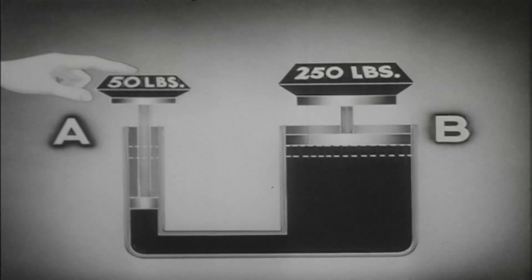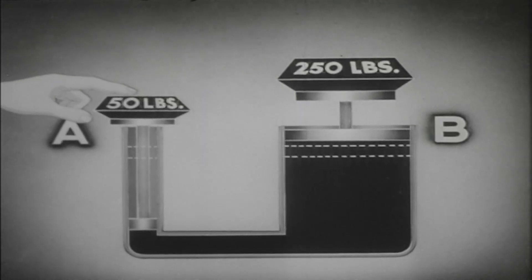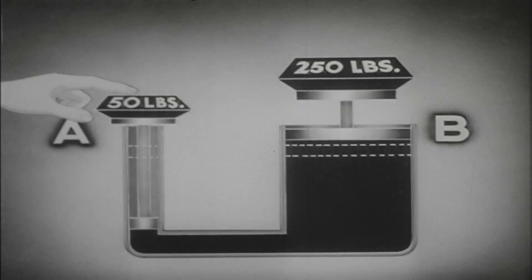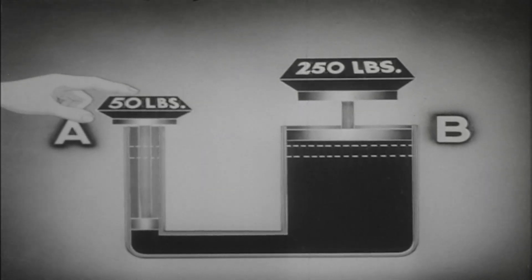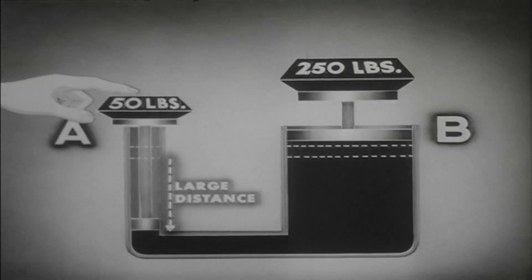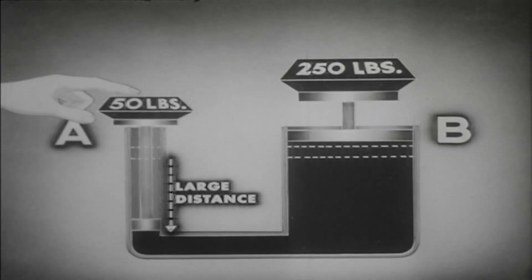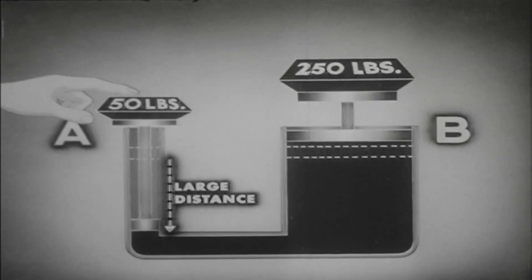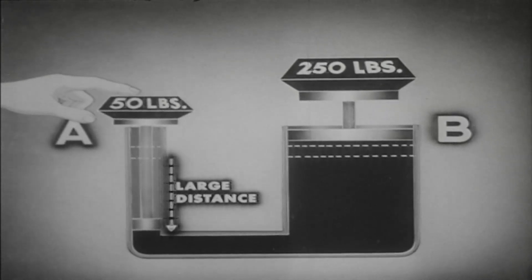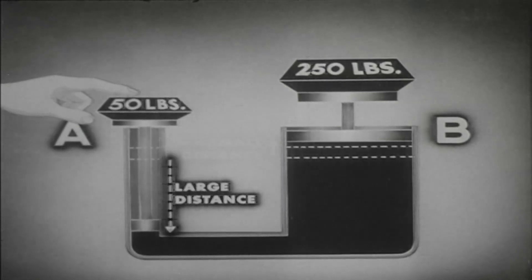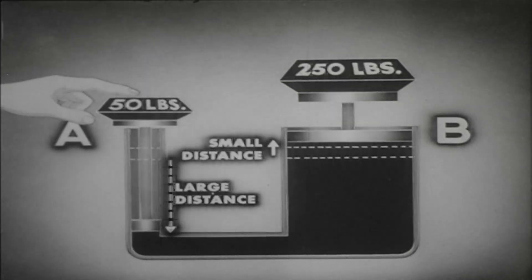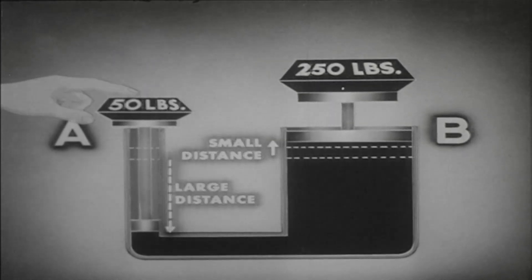And so we see that a fifty pound weight on the input piston can move a 250 pound weight on the output piston. In actual motion, the system would look like this — with the fifty pound weight moving the input piston through a large distance and the output piston exerting a 250 pound total force through a small distance.